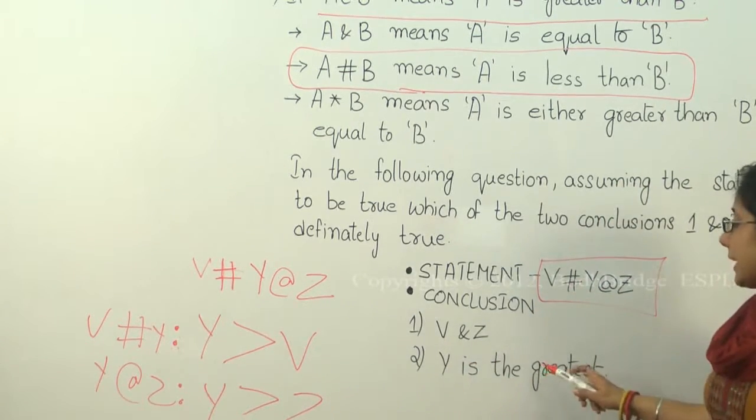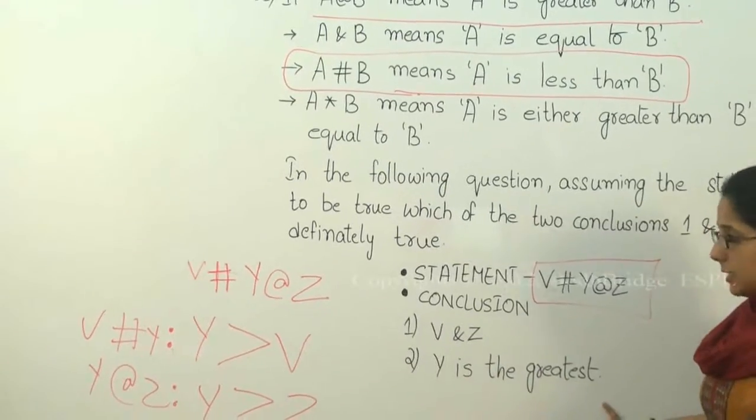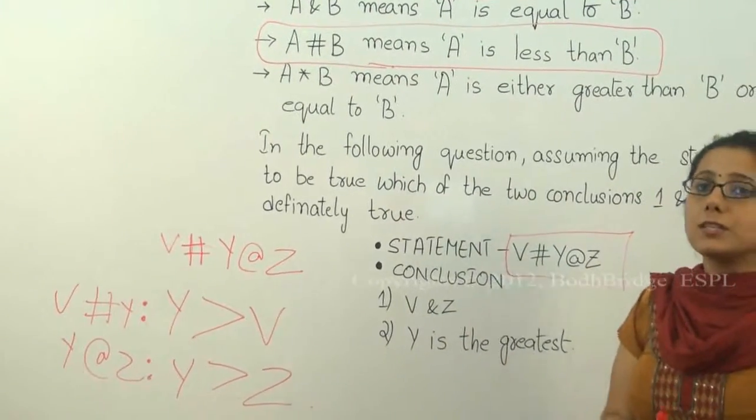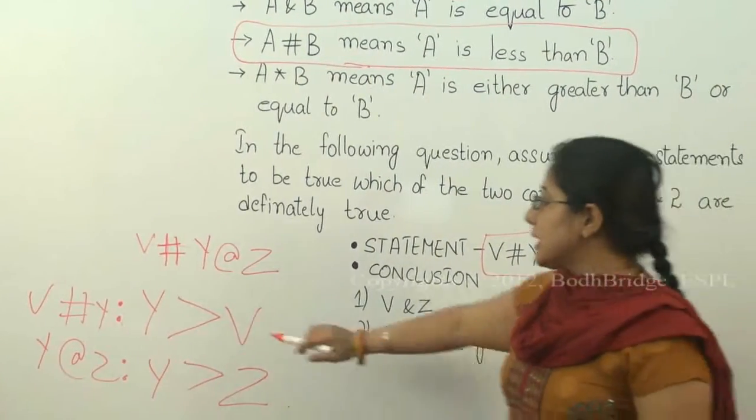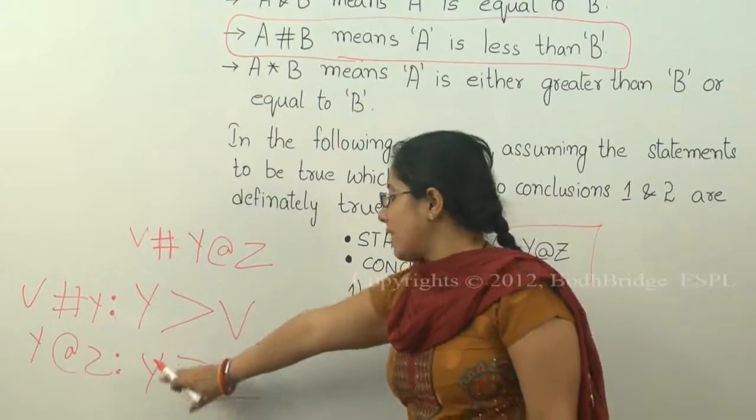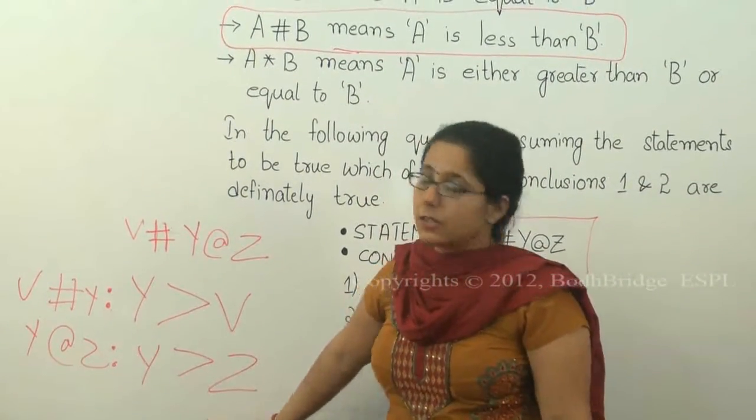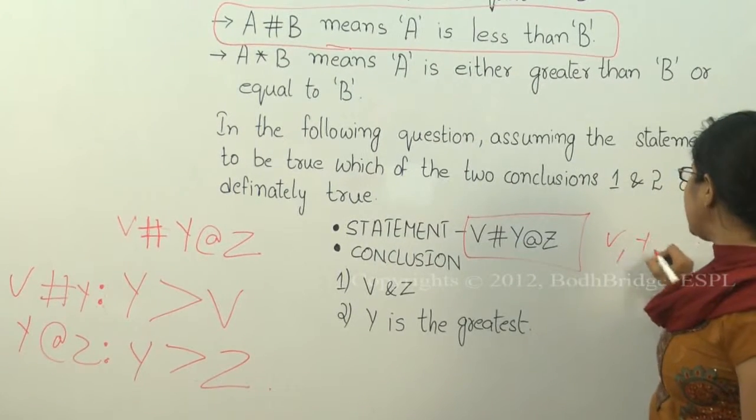So the second statement says Y is the greatest. Yes, the second statement is true. Why? If you see, Y is greater than V and Y is greater than Z, and here three elements are present: V, Y, and Z.